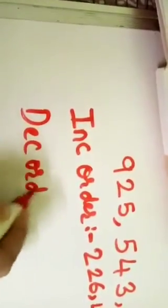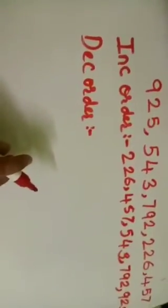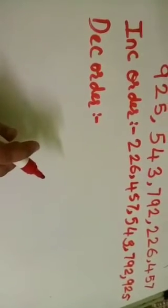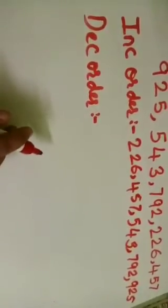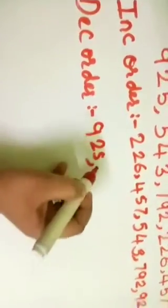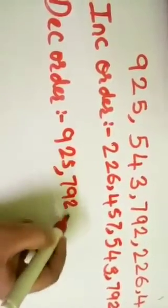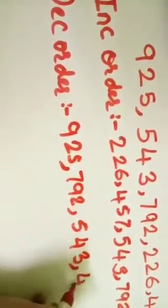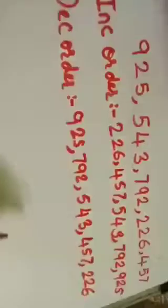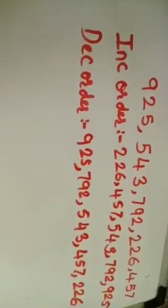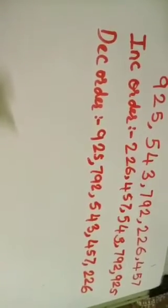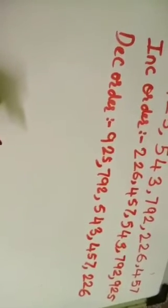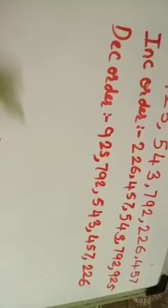We also have to write the decreasing order. Since we already arranged from smaller to bigger, it is easy to reverse. Just take the increasing order and start from the last number. So decreasing order is: 925, 792, 543, 457, 226.